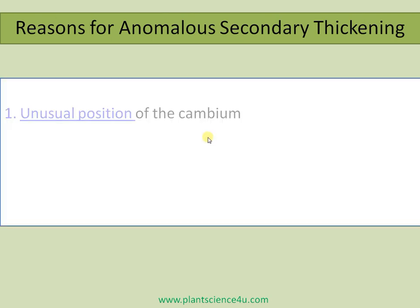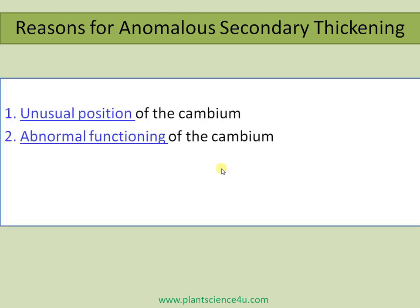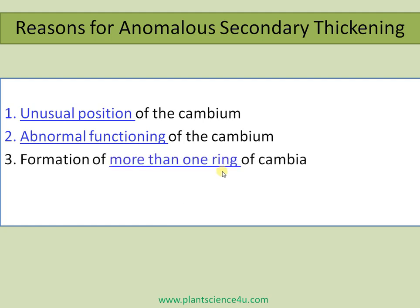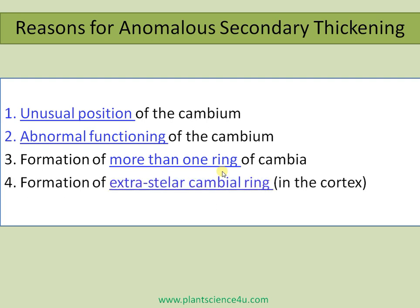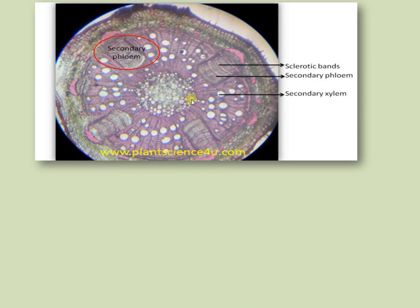The reasons for anomalous secondary thickening include: unusual position of the cambium, abnormal activity of the cambium, formation of more than one cambium, wandering of cambium either on the stele region or on the extra-stelar region, and formation of extra-stelar cambium rings in the cortical region. Normally only cork cambium is present in the cortical region, but sometimes many cambiums may be present in the cortical region, leading to anomalous secondary thickening.